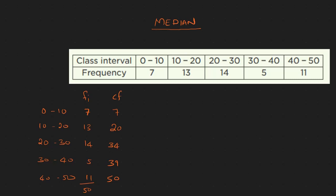The meaning of cumulative frequency: for 0 to 10 it is 7, and for 10 to 20 it is 20. Now, we will calculate the total sum of frequency, which is 50. We calculate n by 2, which gives us 25.